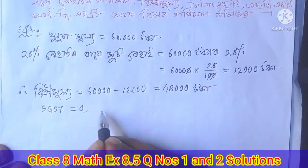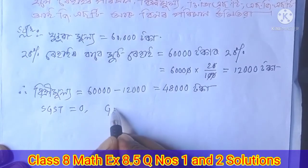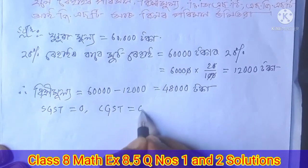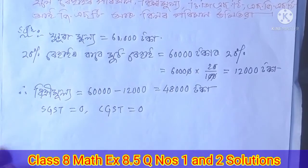For interstate transactions, SGST is equal to 0 and CGST is equal to 0, meaning only IGST applies.